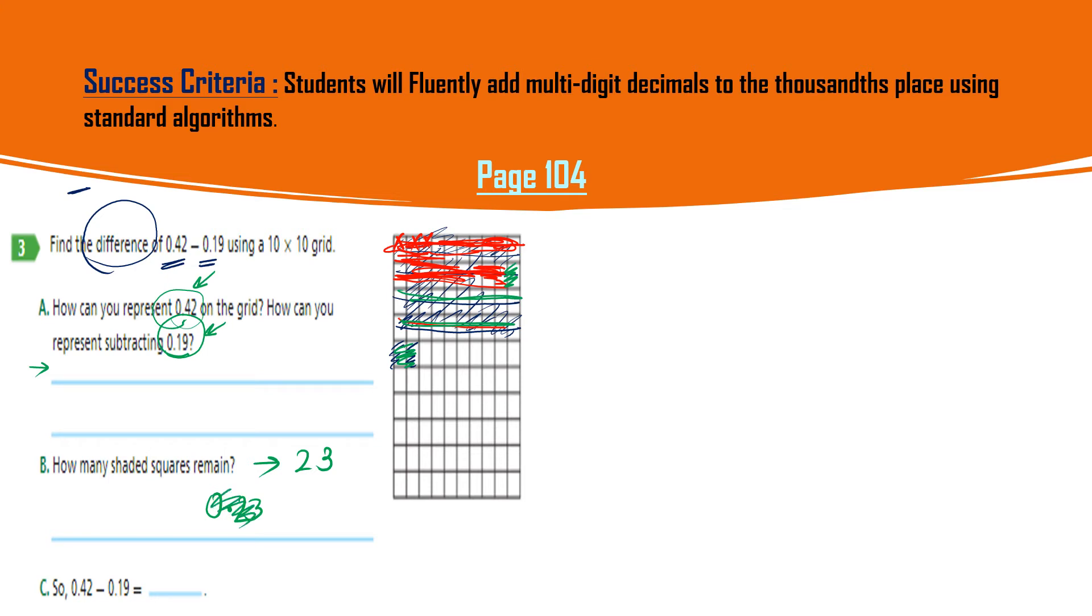Let's try to write it here: 0.42 and 0.19 and subtract. You cannot subtract the 9 from the 2, so what you will do? Take the carry from the neighborhood. So here left 3 and this becomes 12. 12 minus 9 gives you 3. 3 minus 1 gives you 2. Point point point and here is 0.23.